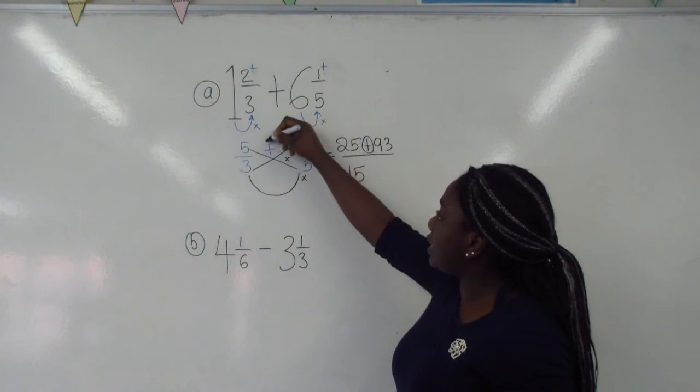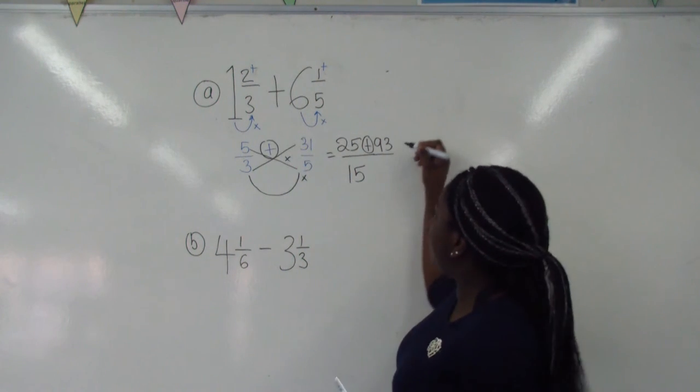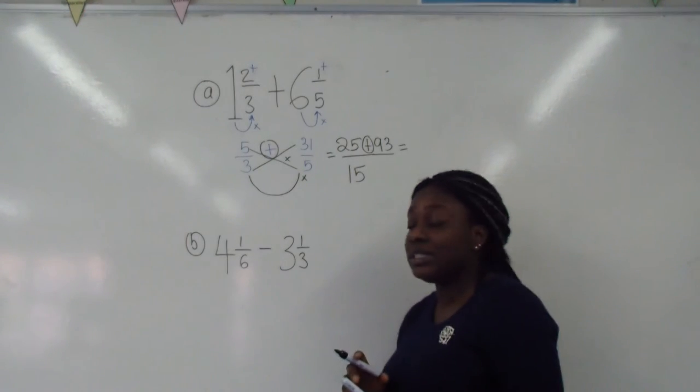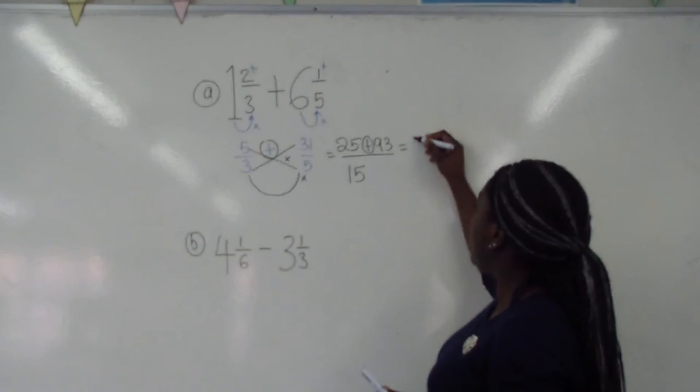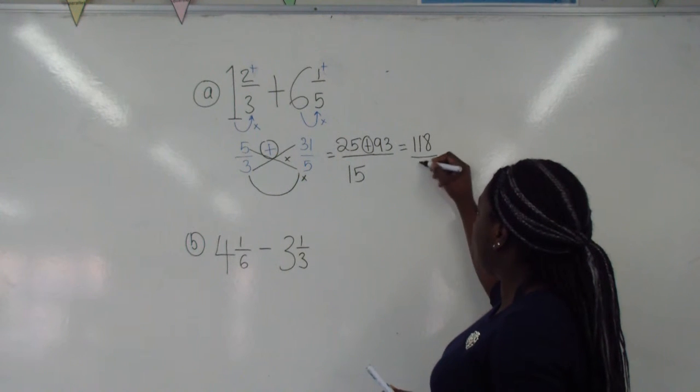Don't forget you're adding because that says add. So 25 and 93 is going to give us 118 out of 15.